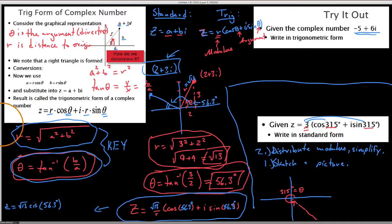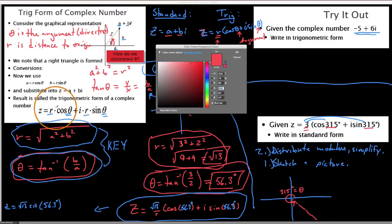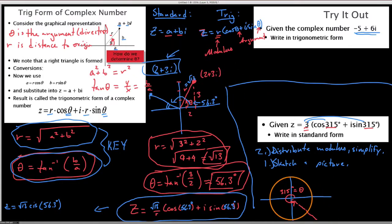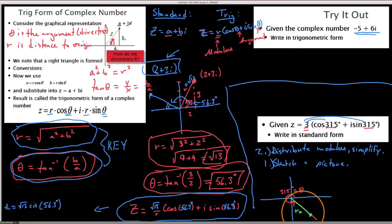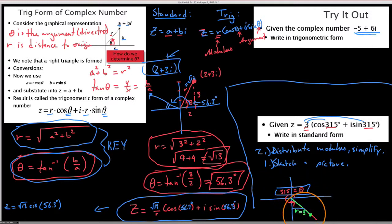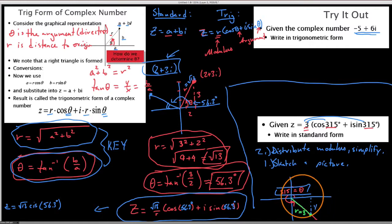Here's the picture: three units out from the origin in the 315 degree direction. We can draw it however we like. Now we drop this down and look for the x and y components, which for complex numbers we call a and b.